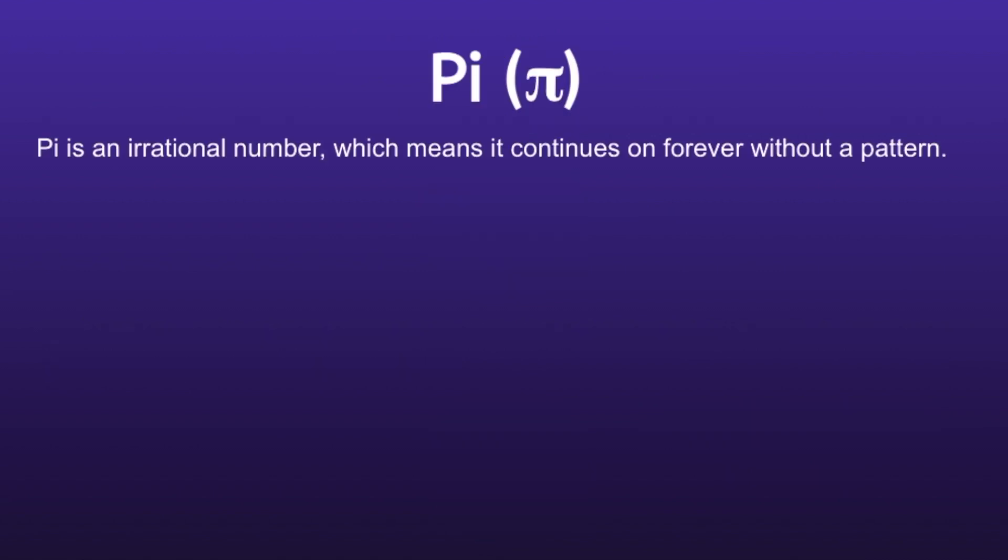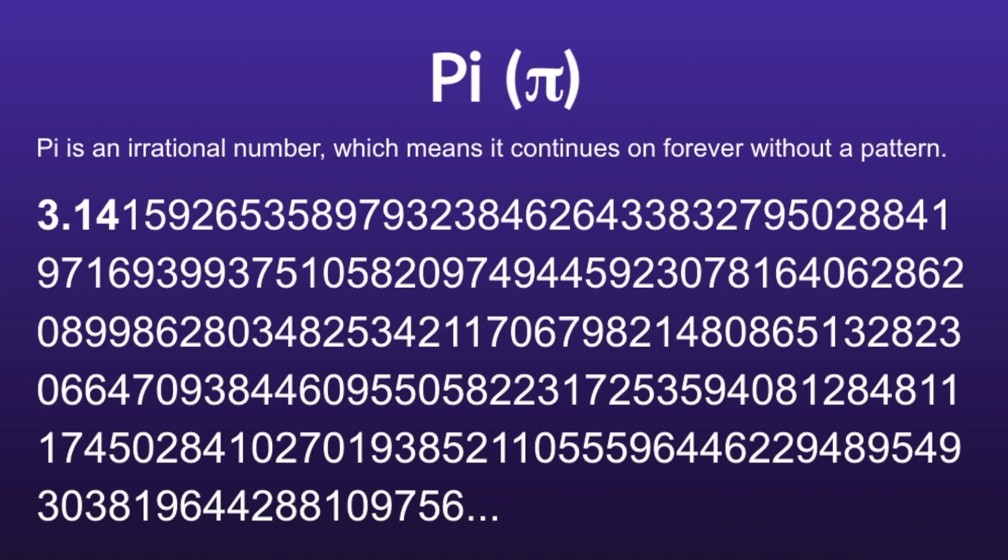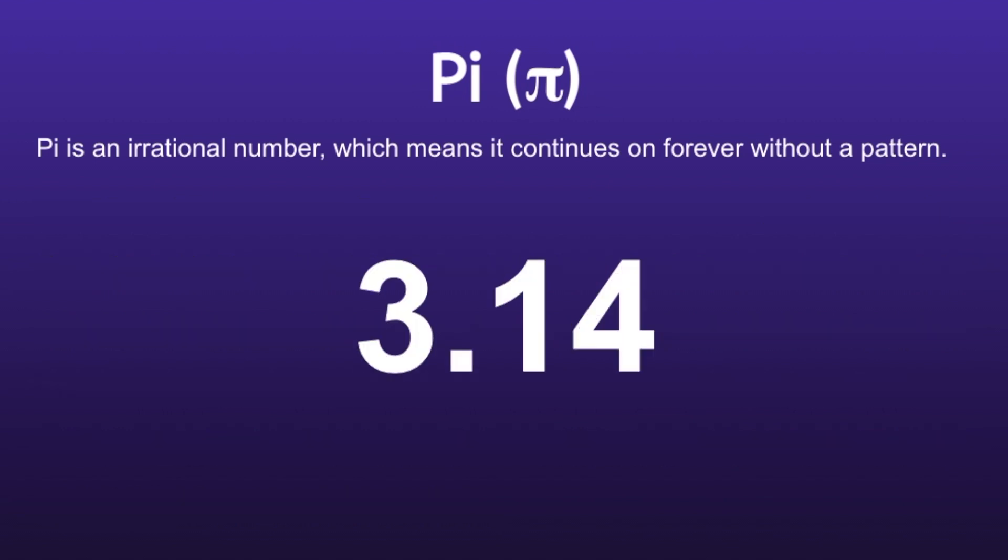Pi. Pi is an irrational number, which means it continues on forever without a pattern. So pi would be read as 3.1415926535, and I'm going to stop there for now. So instead of using this number that continues on forever, we're going to use the number 3.14 to represent pi.